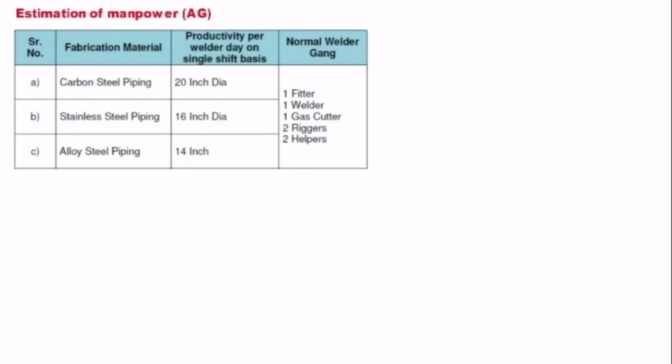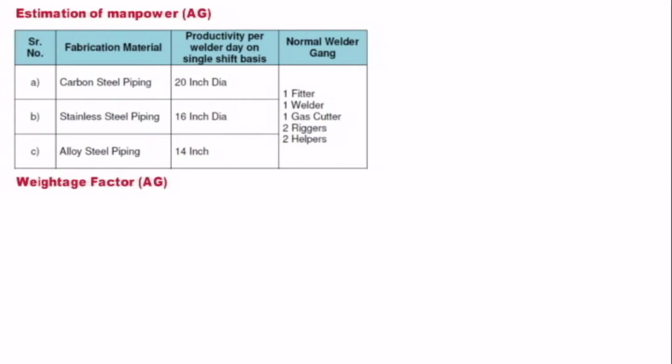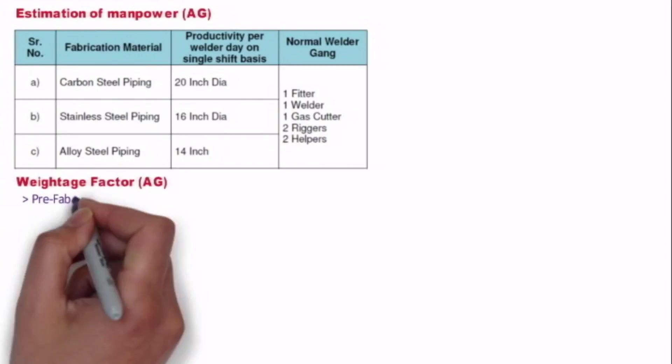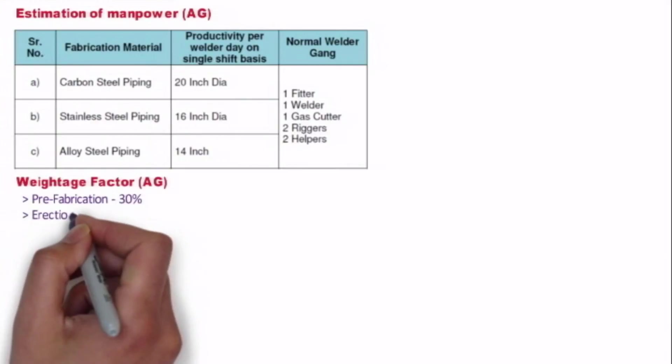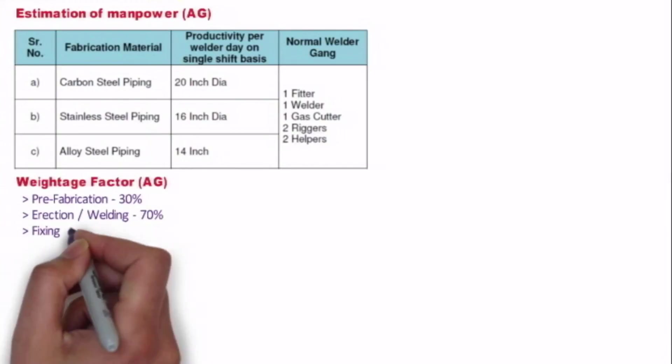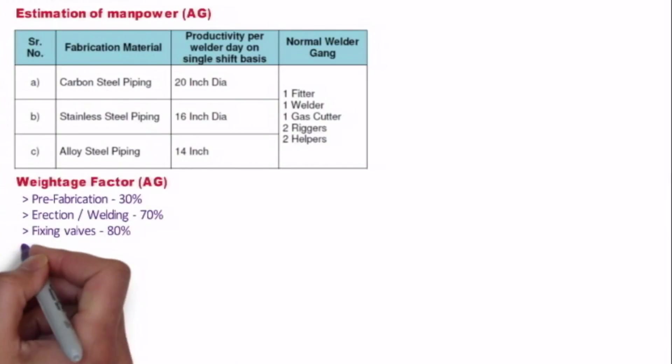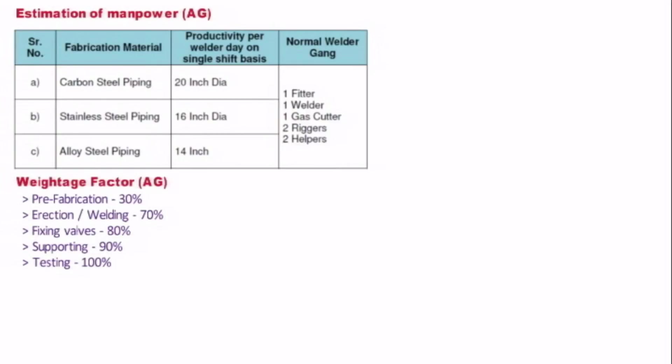Similarly here are some weightage factors for piping on above ground. Pre-fabrication stage is called a 30 percent stage while erection and welding stage is called 70 percent. And if you are fixing the valves it touches 80 percent, and if we are doing the supporting it will touch 90 percent, and during testing we can say we have completed 100 percent of the piping work.